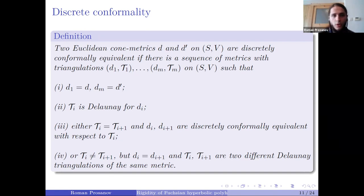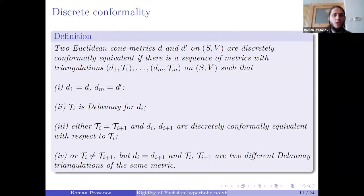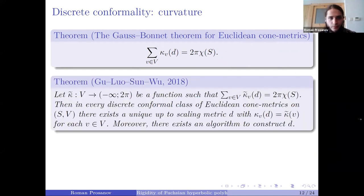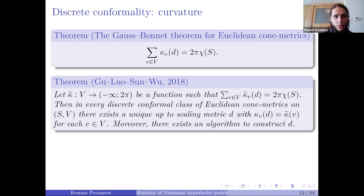This notion turned out to be really good. They managed to prove very interesting results, including uniformization and a very general curvature prescription theory. The curvature prescription can be formulated as follows: for Euclidean con surfaces, a version of the Gauss-Bonnet theorem holds, and if we have a pair (surface, marked point set) with a discrete conformal class and some function satisfying the discrete Gauss-Bonnet equation, then in each discrete conformal class there exists exactly one up-to-scaling metric realizing this function as its curvature, and this metric can be found via a variational algorithm.